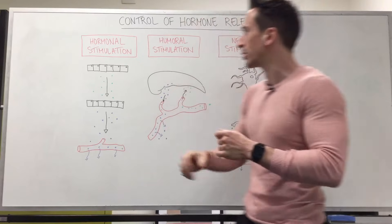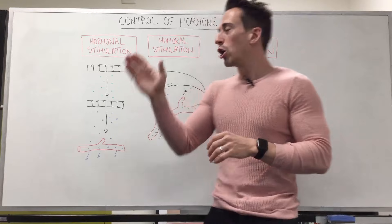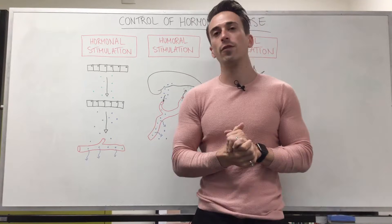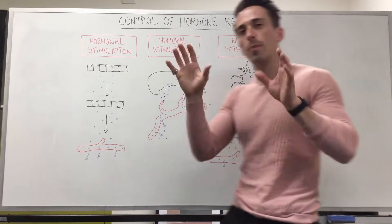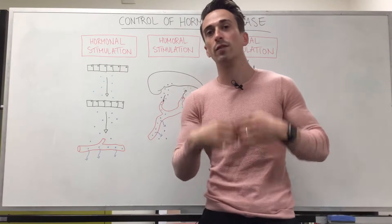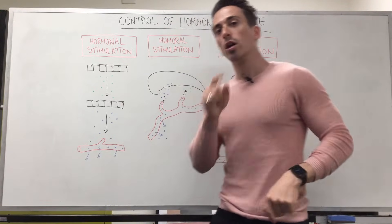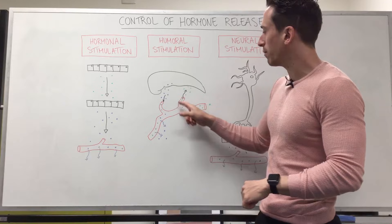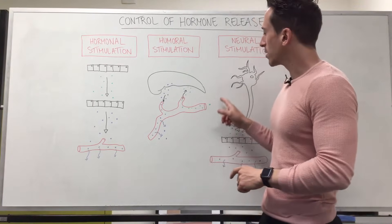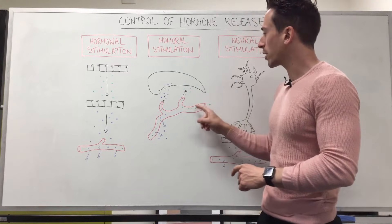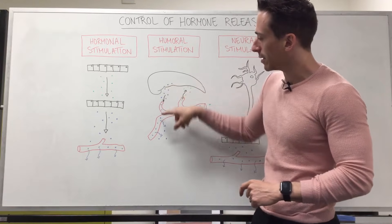That's hormonal stimulation. Now for humeral stimulation — don't get this confused with hormonal stimulation. Humeral refers to things floating around in the bloodstream. What I've got here is the pancreas. The pancreas is responsible for releasing insulin when blood sugar levels are high, and glucagon when blood sugar levels are low. So glucose floating in the bloodstream is the stimulus that tells the pancreas to release insulin.